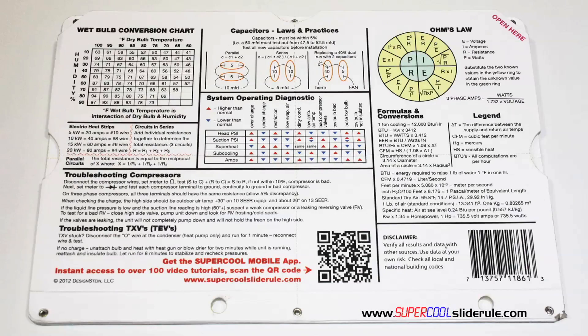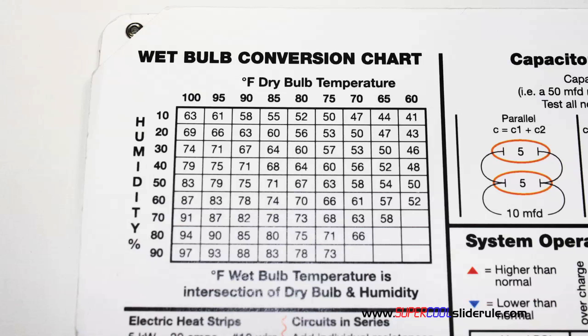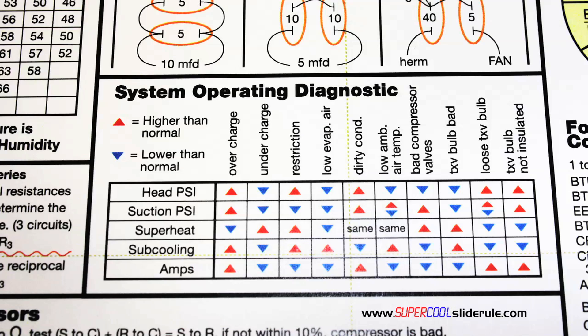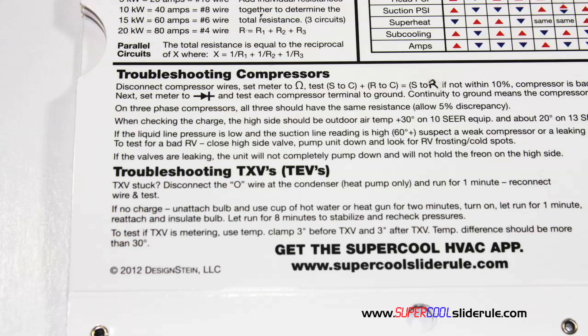The back cover contains required formulas. It has capacitor rules and practices, a wet bulb conversion chart, how to perform computations on series or parallel circuits, an electric heat strip guide, a complete system troubleshooting diagnostic chart, and how to troubleshoot compressors and TXV.